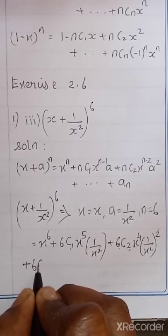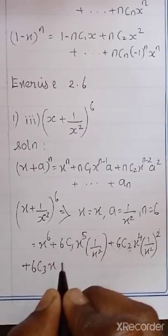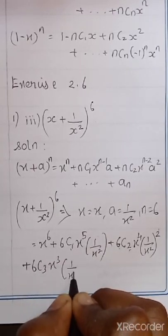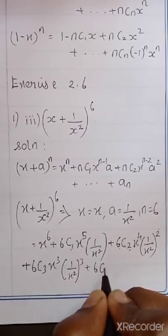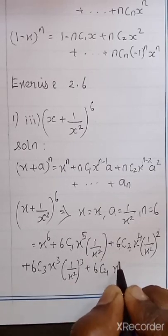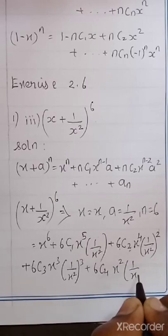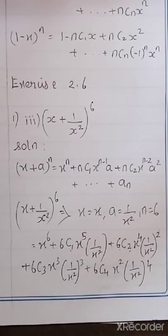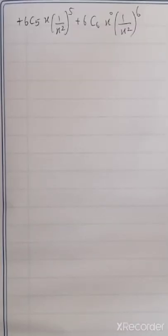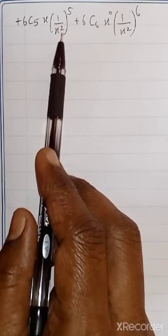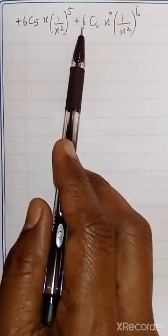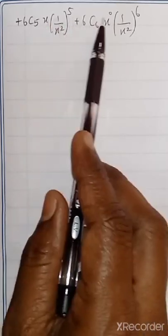Continuing the expansion: 6C3 into X power 3 into 1 by X squared whole power 3, plus 6C4 into X power 2 into 1 by X squared whole power 4, plus 6C5 into X into 1 by X squared power 5, plus 6C6 into 1 by X squared power 6.